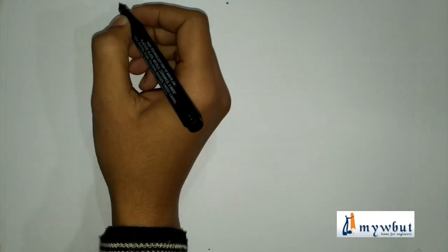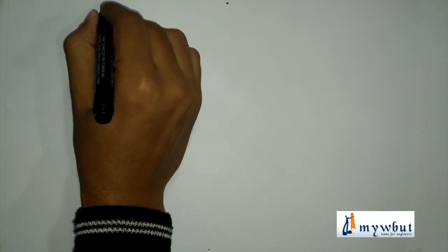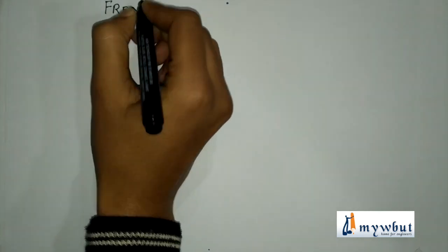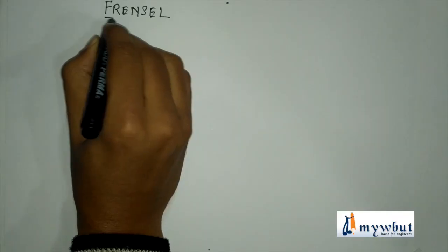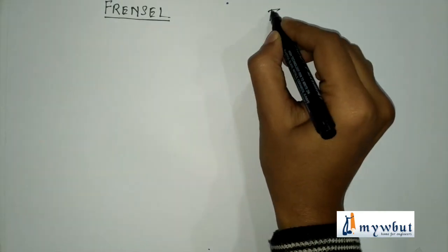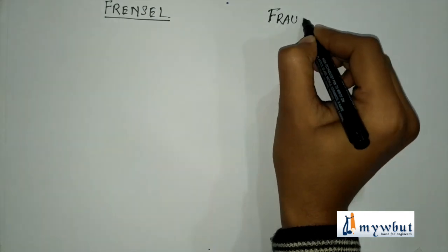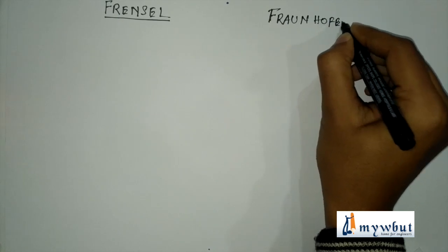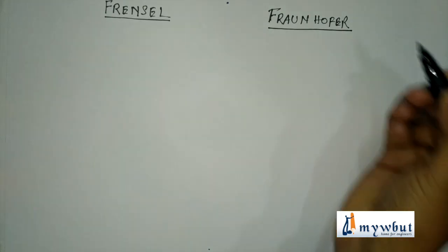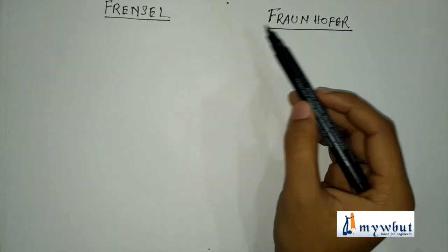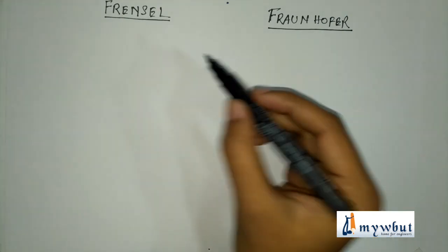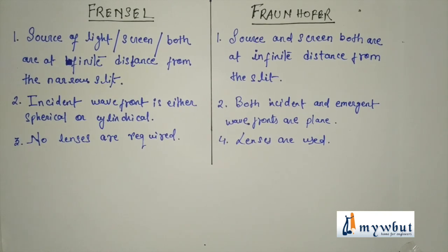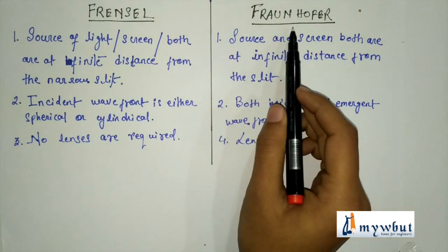Now let us move further and see the derivations and formulas. We are going to study two types of diffraction: number one is Fresnel diffraction, and number two is Fraunhofer diffraction. Here I have written the difference between these two kinds of diffraction.